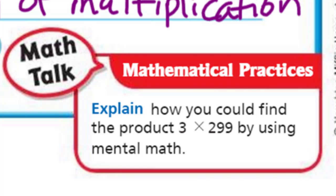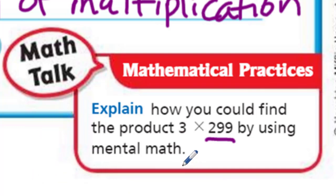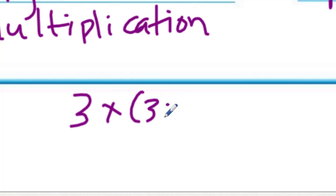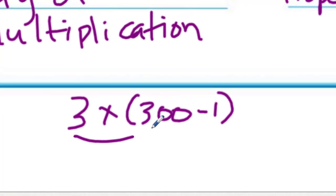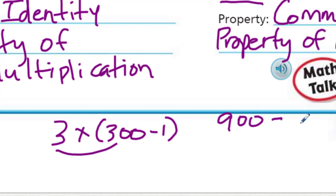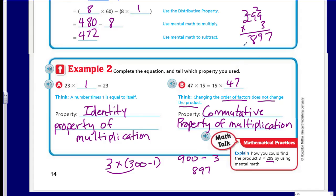Math talk: explain how you could find the product 3 times 299 using mental math. Well, 299 is so close to 300. Use the distributive property: 3 times (300 minus 1) equals (3 times 300) minus (3 times 1), which is 900 minus 3 equals 897. Let me verify: 299 times 3 — carry the 2, that's 29, carry the 2, and 2 times 3 is 6, plus 2 equals 8. Yep, 897. Correct!